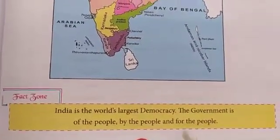Question 6: Write a few lines about the judiciary system in India. The Supreme Court in New Delhi is the highest judicial body. Its decisions are final. The High Court is the highest court in the state. There are district courts at the district level.